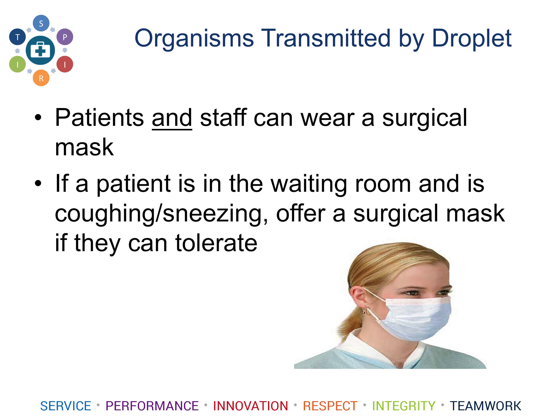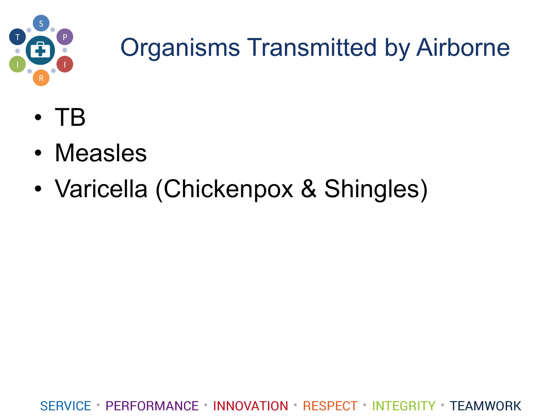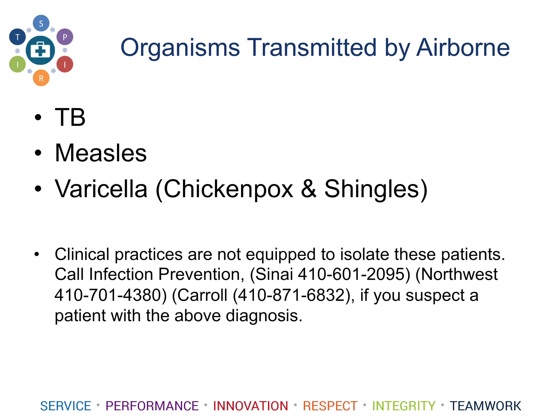If a patient in the waiting room is coughing, sneezing, or symptomatic, offer them a surgical mask if they can tolerate it. For airborne precautions, these are organisms spread by very small airborne droplets through the air, and for this you would want to wear an N95 fit-tested respirator, as seen on the slide. Some airborne organisms are TB (tuberculosis), measles, and varicella, including chicken pox and shingles. It is important to note that in the clinical practice setting, we are not equipped to handle these patients from an isolation standpoint. If you suspect a patient with the above diagnosis, call infection prevention at your closest institution — Sinai, Northwest, or Carroll.